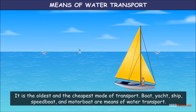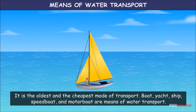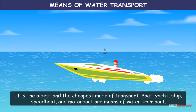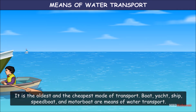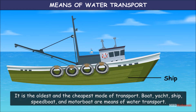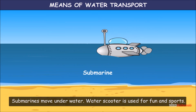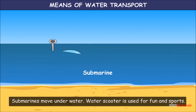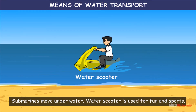Means of water transport: it is the oldest and the cheapest mode of transport. Yachts, speedboats, boats, ships, and motor boats are means of water transport. Ships are used to carry heavy and bulky goods. Submarines move underwater. Water scooters are used for fun and sports.